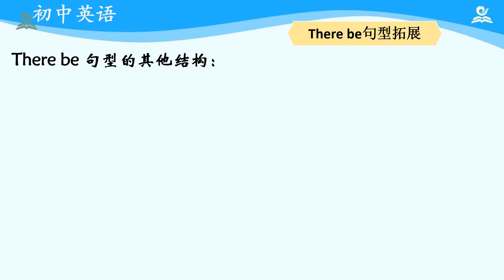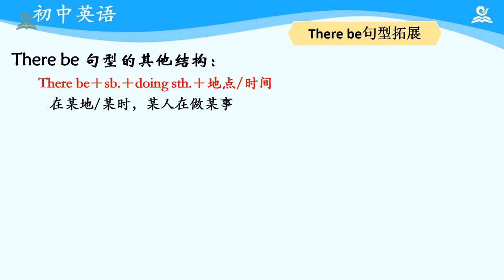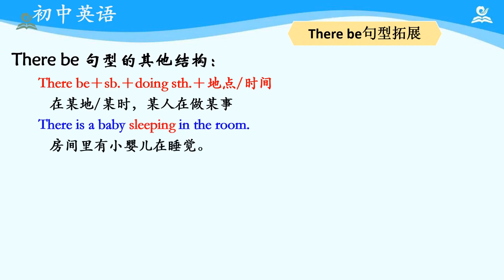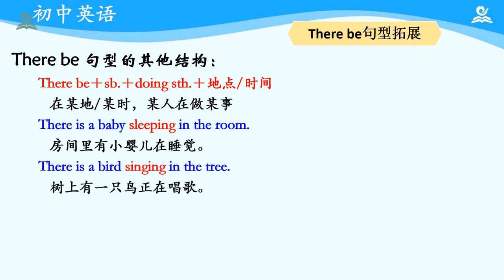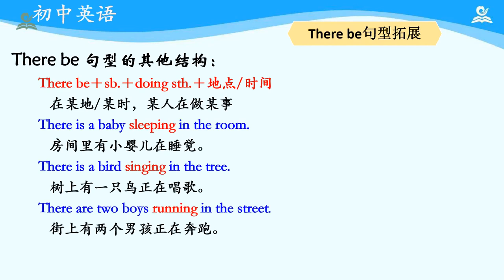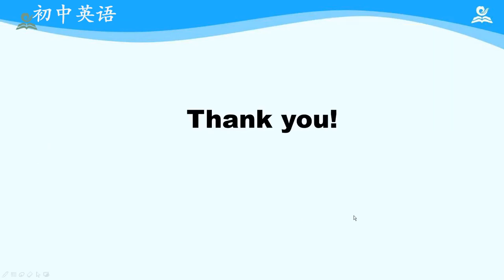在本节课的最后，让我们再看一看有关 there be 句型的拓展部分。在我们自己的写作过程当中，可以参考这样的结构：there be 句型加上 somebody doing something，再加上具体的时间或者地点。这个结构的意思是在某地或某时某人在做某事。例如：There is a baby sleeping in the room（房间里有个小婴儿在睡觉），There is a bird singing in the tree（树上有一只鸟正在唱歌），There are two boys running in the street（街上有两个男孩正在奔跑）。在自己写作的过程当中，可以参考这样的句式来丰富表达。